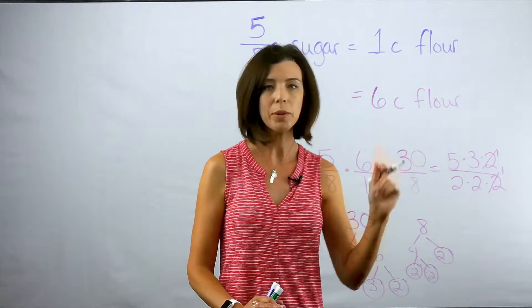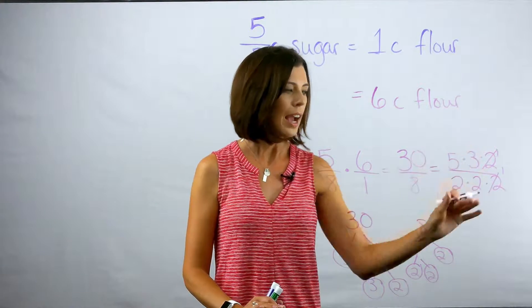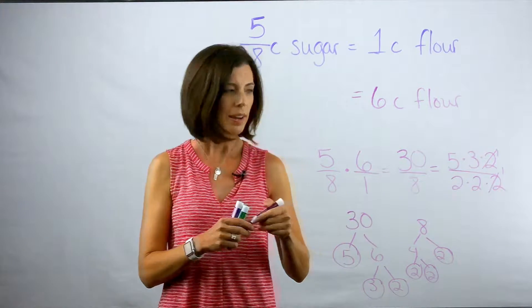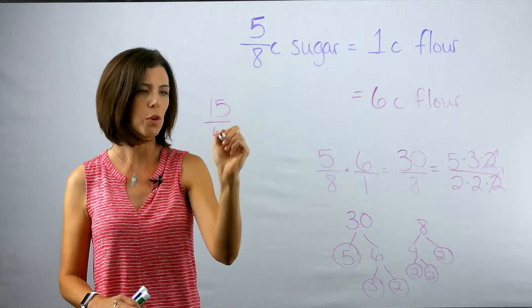Now I can see that two over two makes one. So I'm going to just reduce those down to a one and then do my multiplication. So I have five times three which is fifteen, two times two which is four.